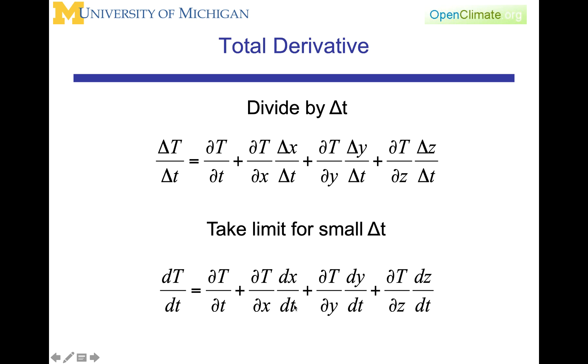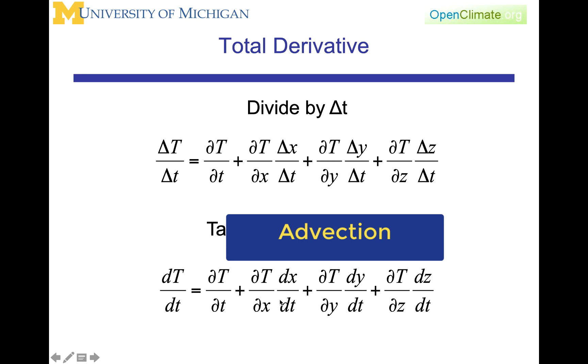This term here, dx/dt, is the velocity. So you can see here that the velocity times this gradient in dT/dx is what is at a point, at a fixed point in space. There is a change of temperature that might be due to local processes, perhaps such as radiation, plus the changes that are going to be associated with how the wind is advecting, which we call this process advection, how the wind is transporting information about the spatial structure of the field.